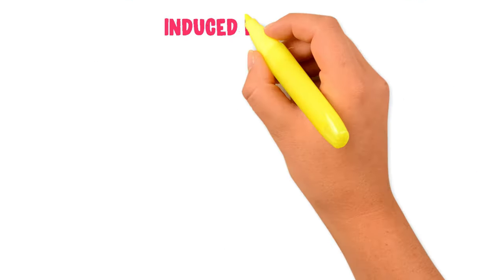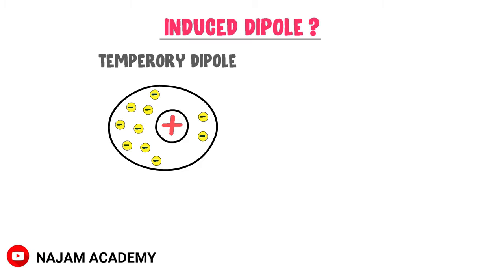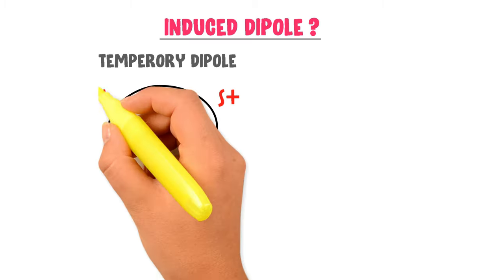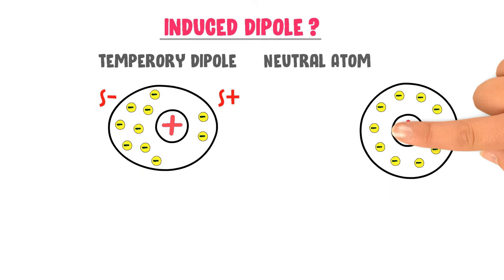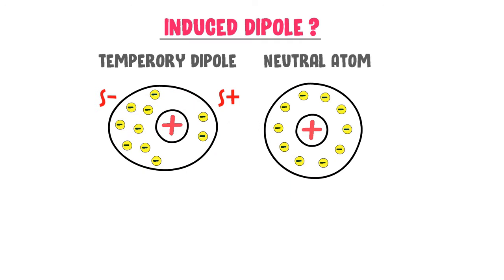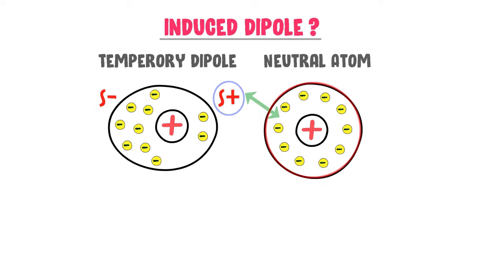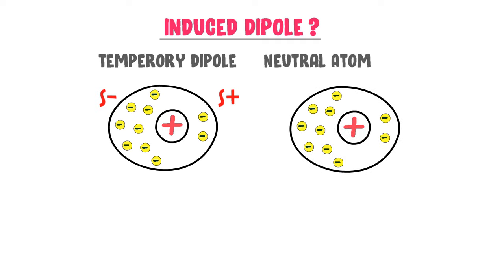Now let me teach you about induced dipole. Consider a temporary dipole. We know that a temporary dipole has a temporary positive pole and a temporary negative pole. Now, I bring a neutral atom near this temporary dipole. The positive side of this temporary dipole will pull the evenly distributed electrons of this neutral atom — or you can say that the positive pole of this temporary dipole will pull the electronic cloud of this neutral atom. As a result, the structure of this neutral atom will also be distorted.